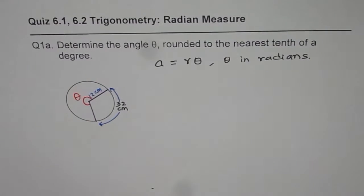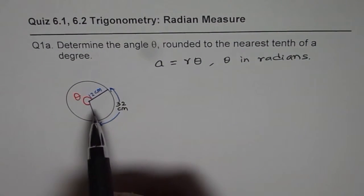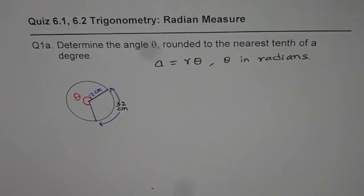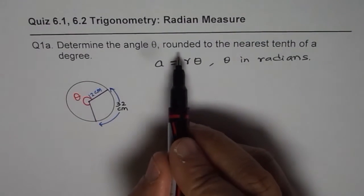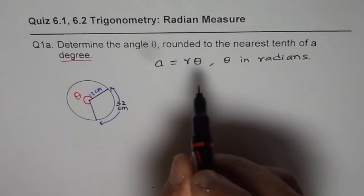That is very important whenever you use a equals r theta. Now in this case, you should make a note that says rounded to nearest tenth of a degree, so the answer which you are going to get